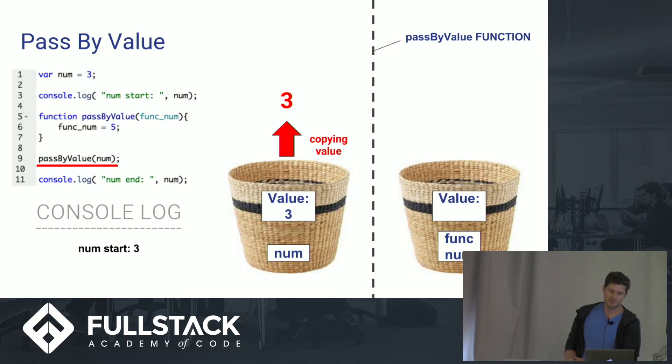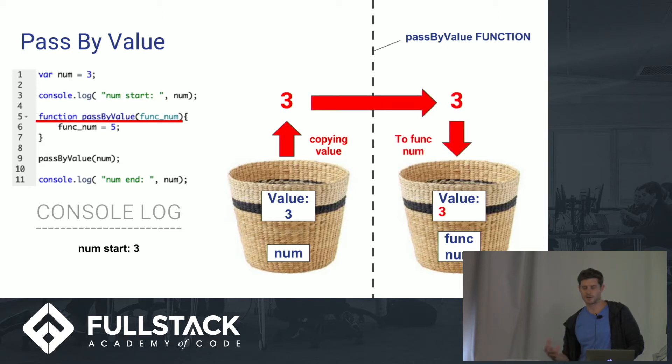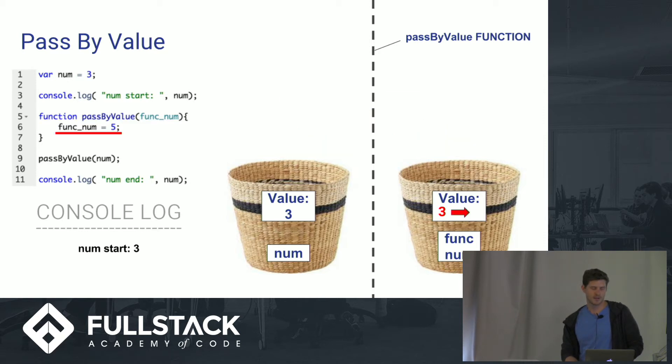So when we actually call the pass by value function, we're passing in our num variable. And what we do when we jump into the pass by value function is we actually make a copy of that variable, and as you can see here, we copy 3 and we actually place that into our func num basket, which is our pass by value variable. Inside of that function, we're executing this line here, which is func num set equal to 5. And what we actually do there is overwrite our value of 3 and we put 5 in our basket. So when we console log that out at the end, this is why we get 3 on both sides. And I think this clearly displays here why you output 3 on both sides. You actually overwrote the copy that you passed into your pass by value function.